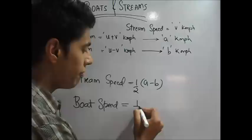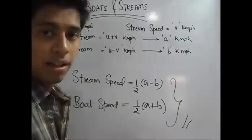So it is half of a minus b. Similarly, for your boat speed, it will be half of a plus b. This formula you can use directly and find out the answer.